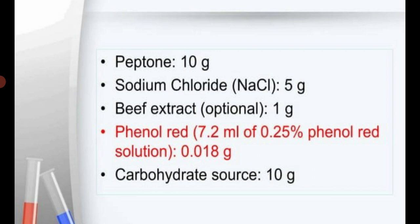Composition of media per 1 liter: peptone 10 g, sodium chloride 5 g, beef extract 1 g, phenol red 7.2 ml of 0.25% phenol red solution, and a carbohydrate — for example, 10 g of glucose to make glucose broth. Instead of phenol red, you can add Andrade indicator.